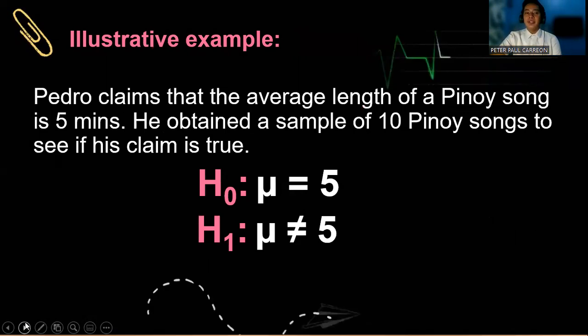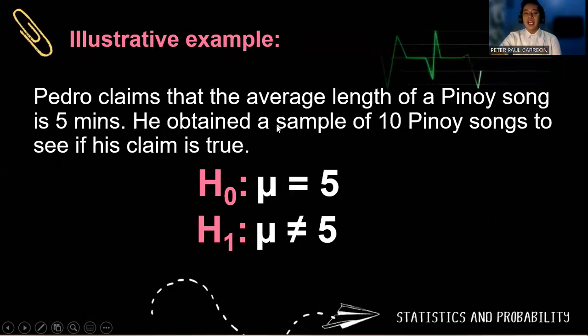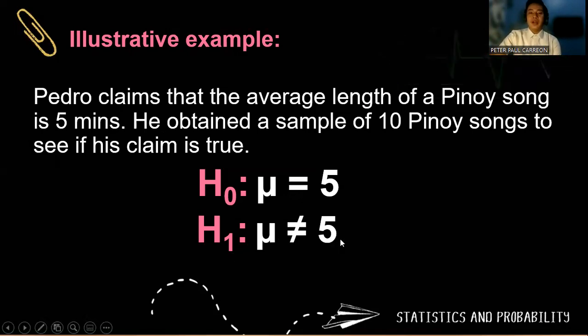Let's have an example. Pedro claims that the average length of a Pinoy song is 5 minutes. He obtained a sample of 10 Pinoy songs to see if the claim is true. When you write H sub 0, which is our null hypothesis, we have μ = 5. For the alternative hypothesis, we use the symbol H sub 1, which is μ ≠ 5.